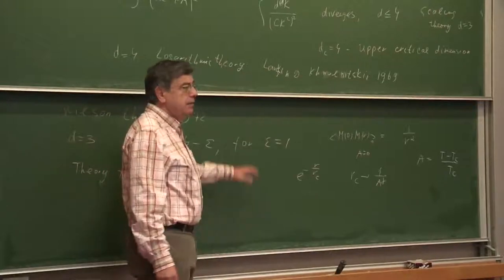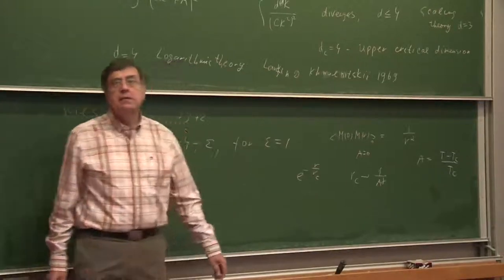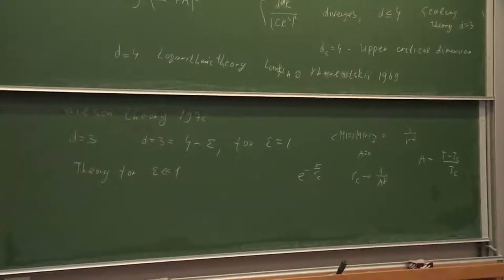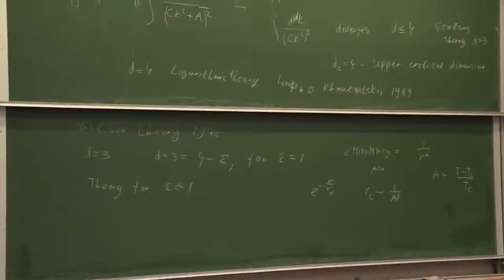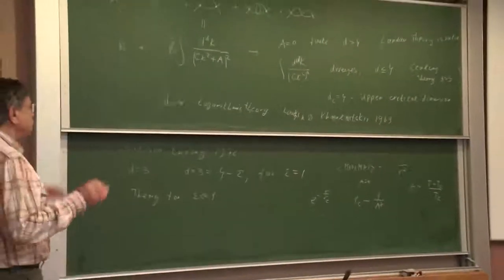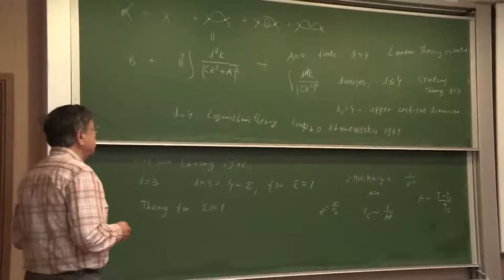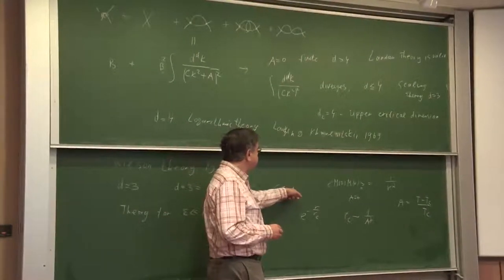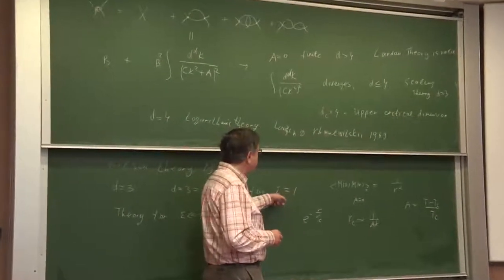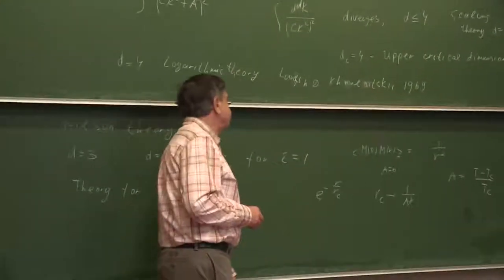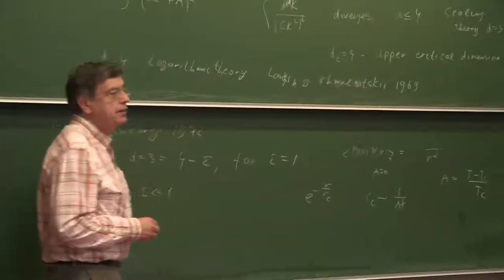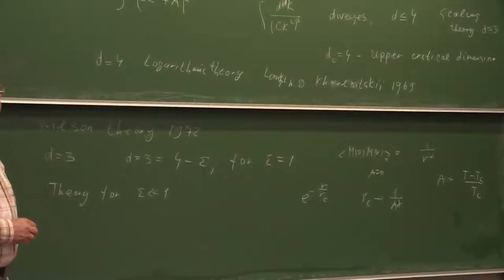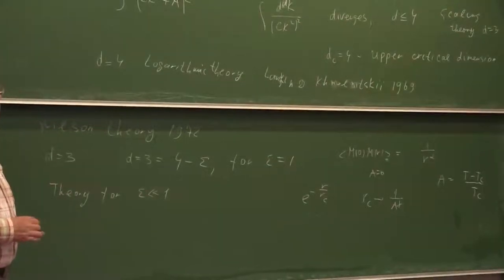Using this 4 − ε expansion, one can really calculate all those exponents as an expansion in ε. Everything can be done, and the recipe by Wilson was: calculate with small ε and at the end just put ε = 1, landing in the dimension where we live. That was the recipe — at that time it was very shocking.